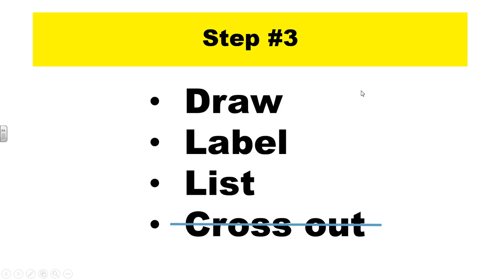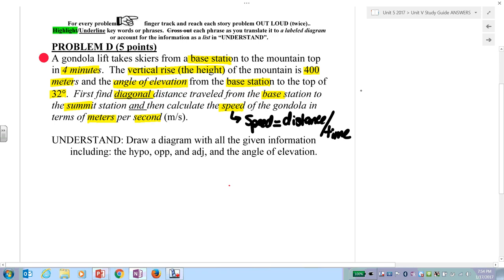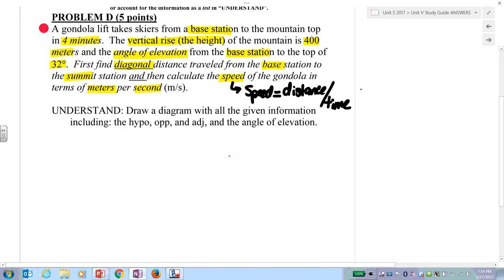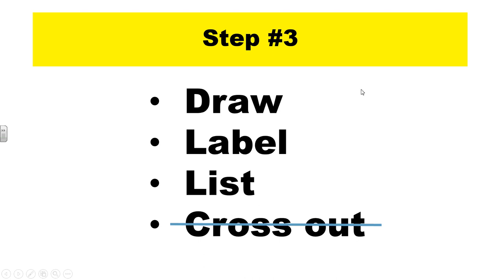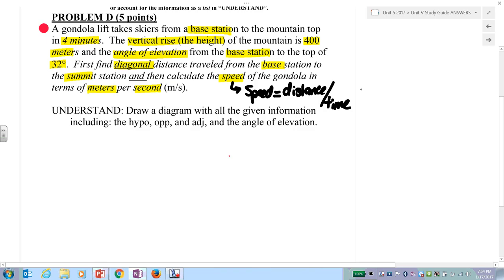Step three: draw, label, list, cross out. Draw the diagram, label the diagram, list the given information, and cross it out. Do this on your own. Pause the video.